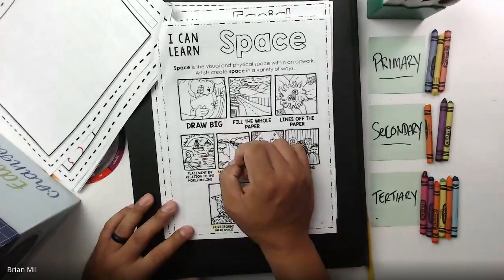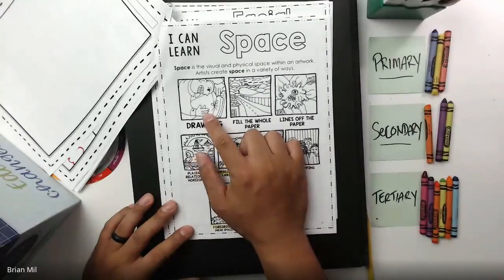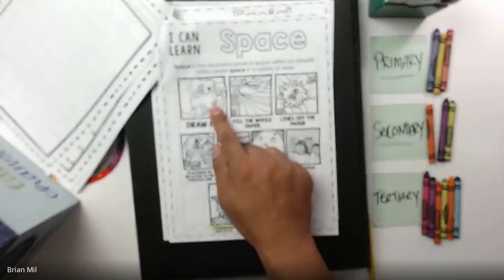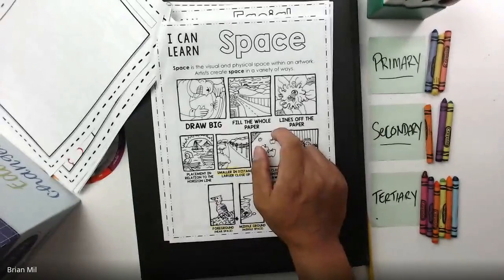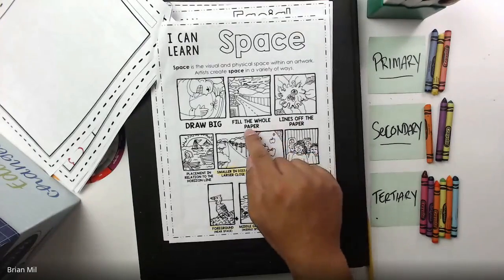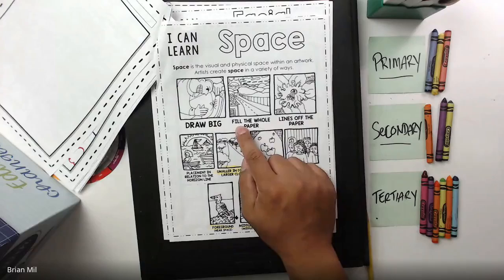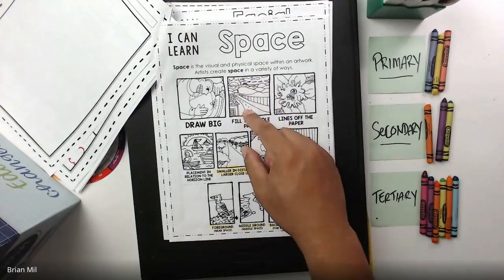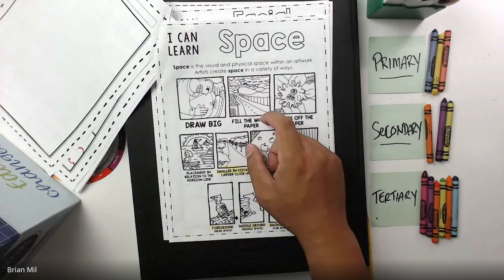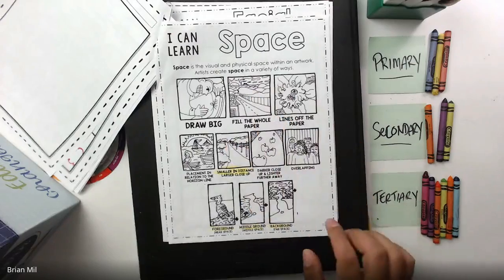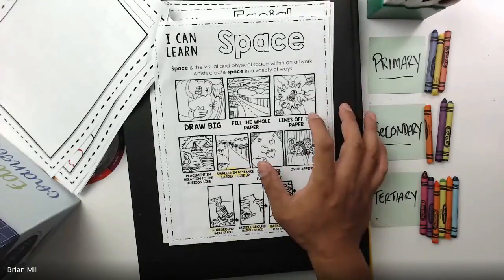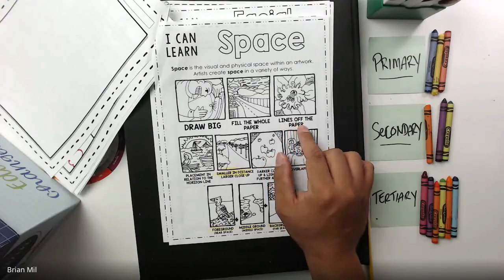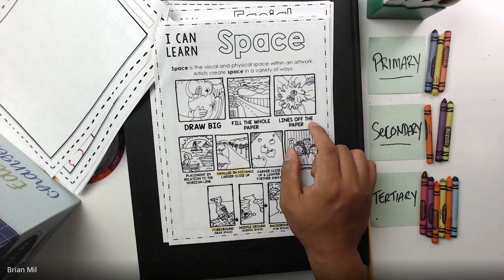Let's talk about each one. One way to create space is to draw big — this one's a big drawing in the square. Another way is filling the whole paper; if you fill every single part of the paper with some part of the drawing, that's a way to use space. The next one, the third one, is lines going off the paper — that's another way to use space.